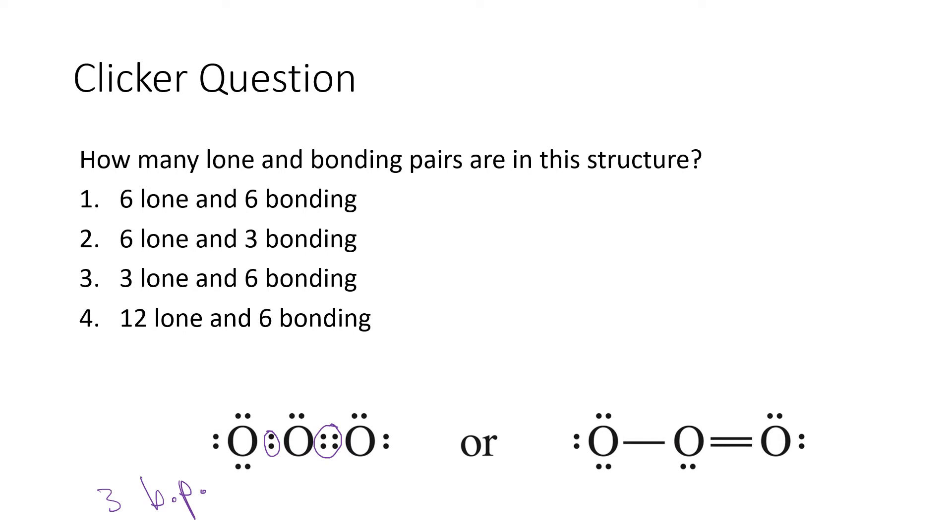And then for the lone pairs, we have one, two, three, four, five, six. So that gives us six lone pairs. So three bonding pairs and six lone pairs. And that is answer two.